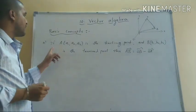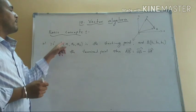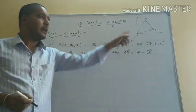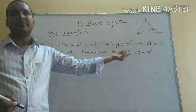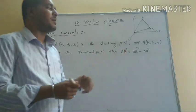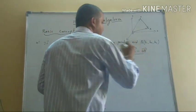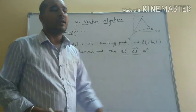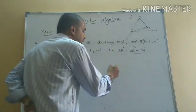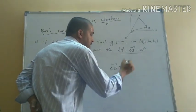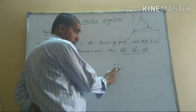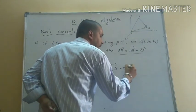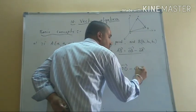Fork point — basic concept. If A is at point (a1, a2, a3) — that is the starting point — and B is the terminal point, then vector AB = OB − OA. This is a very important formula. Similarly, for points C and D: vector CD = OD − OC.